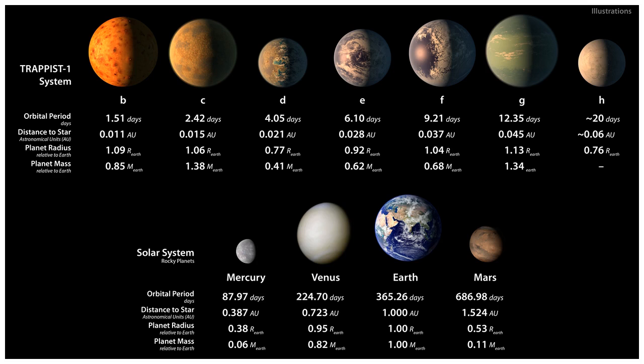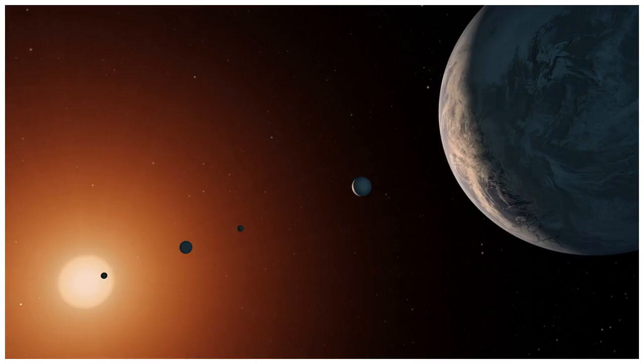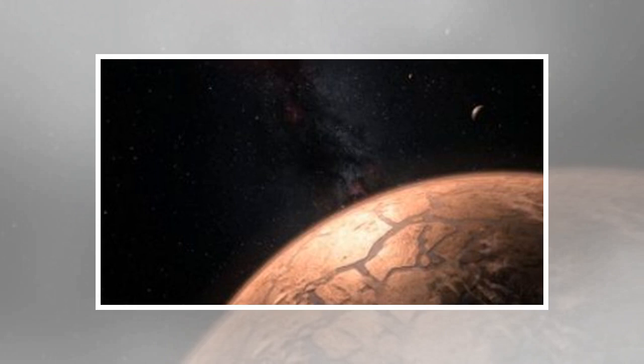It's been theorized that life on Earth may have actually traveled here from Mars. Based on the masses of the planets in the TRAPPIST-1 system, and their relatively short distance from one another, it's thought that panspermia might be as much as 10,000 times more likely to take place there than in our solar system.